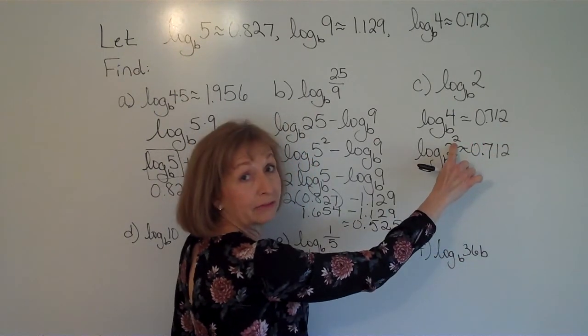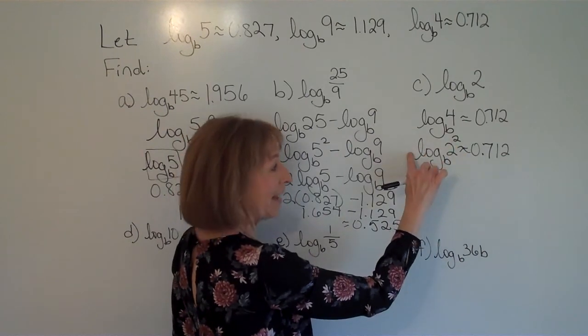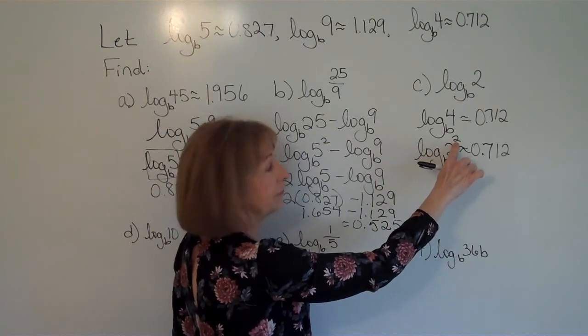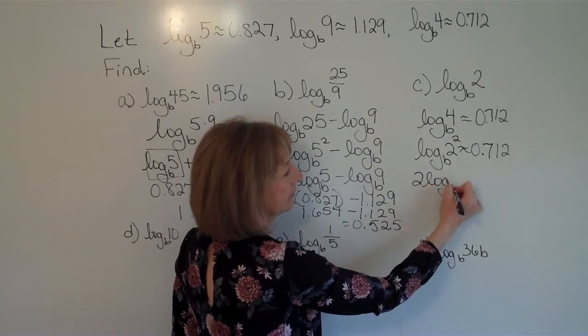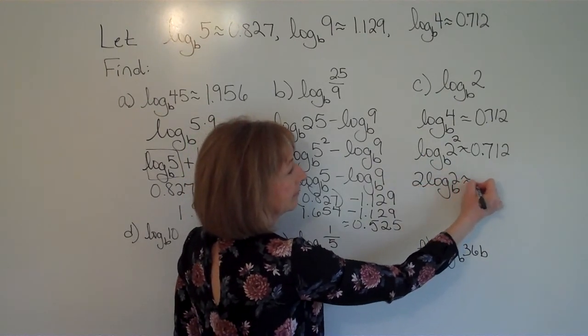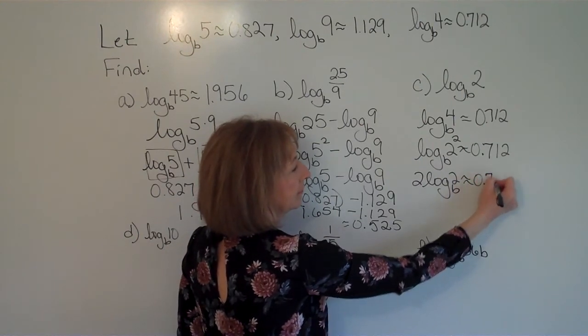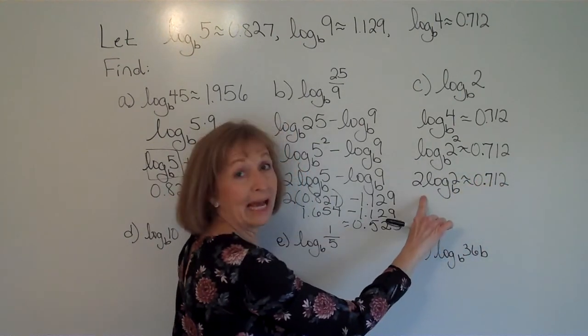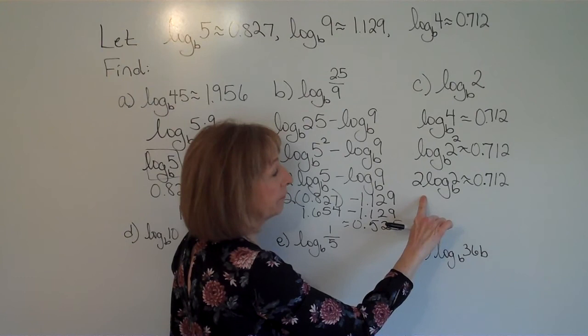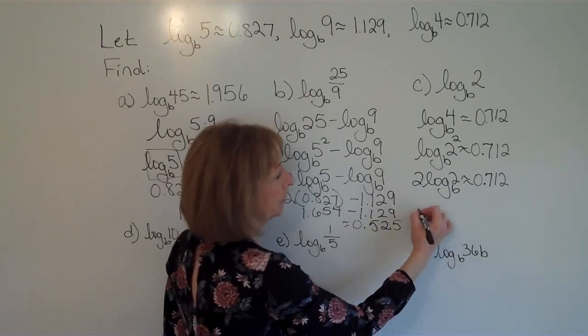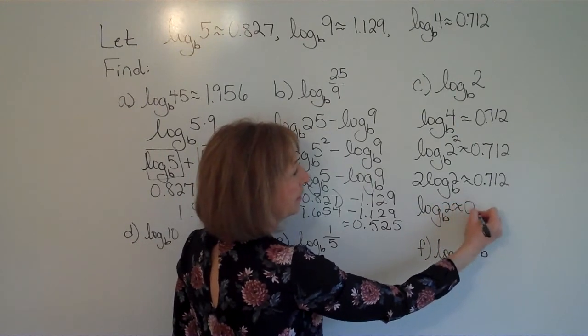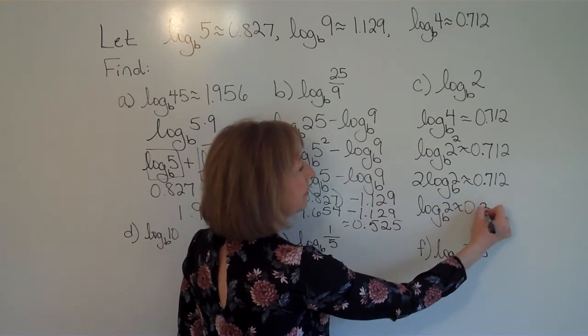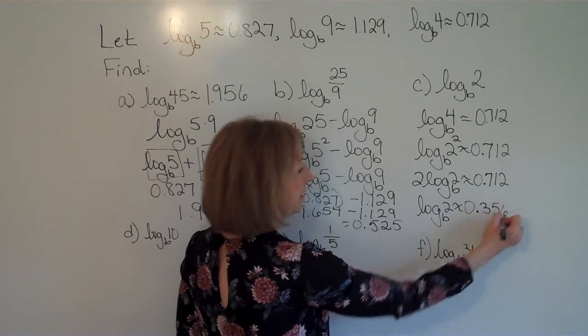And by properties of logarithms, I can bring the exponent of 2 on the base of 2 out front as a factor. And now dividing both sides by 2 to solve for the log base b of 2, I get log base b of 2 is about 0.356.